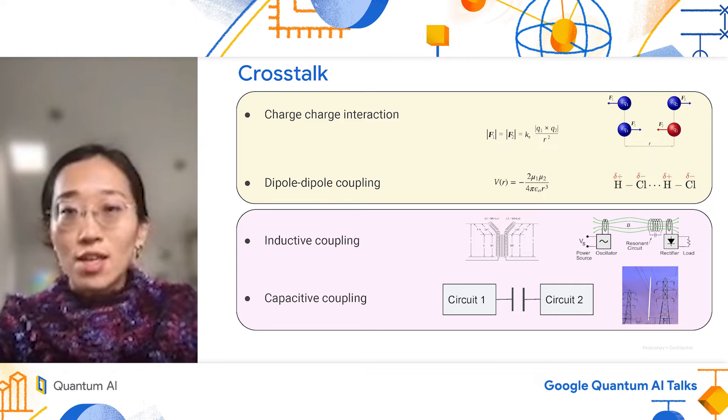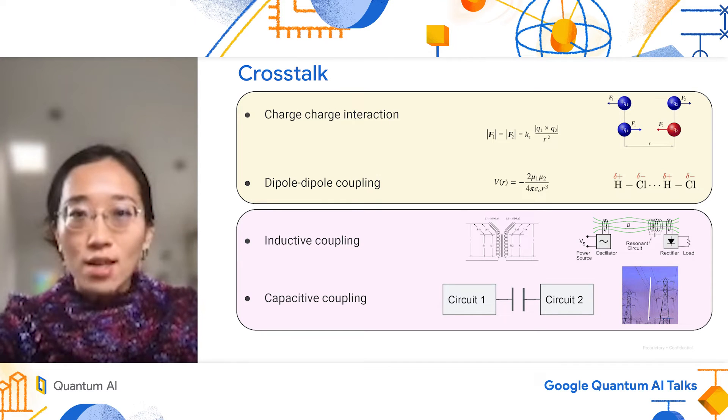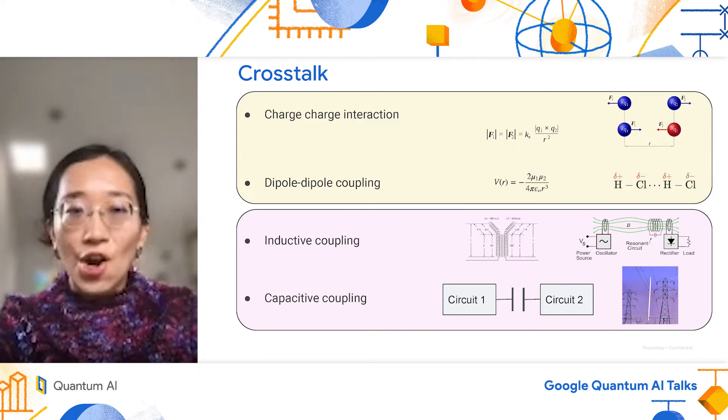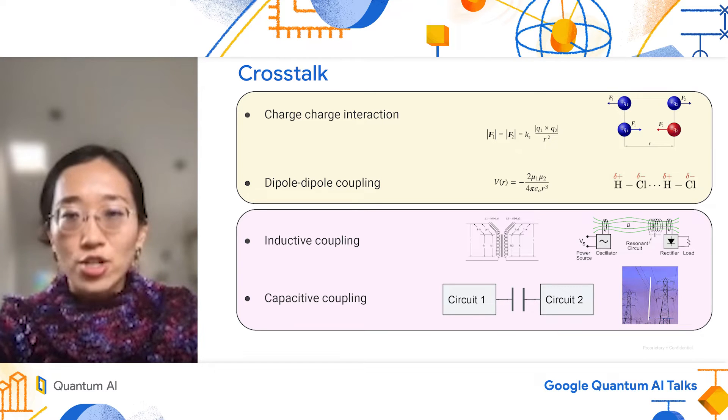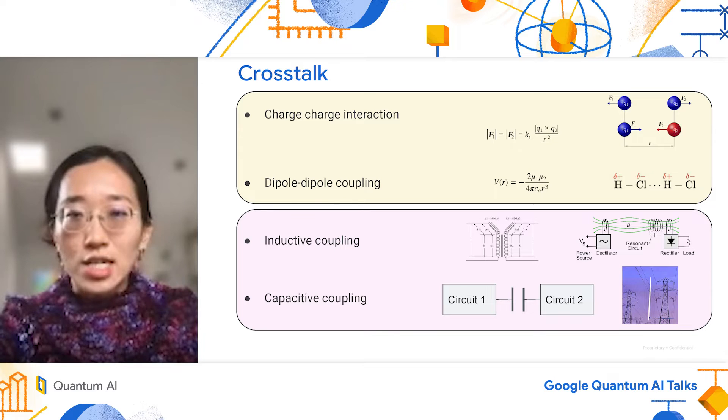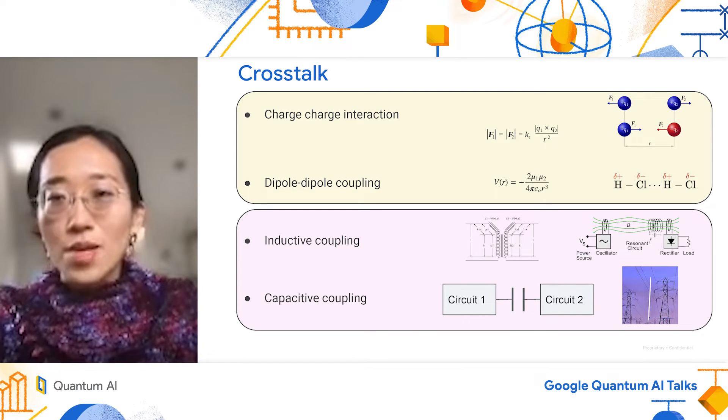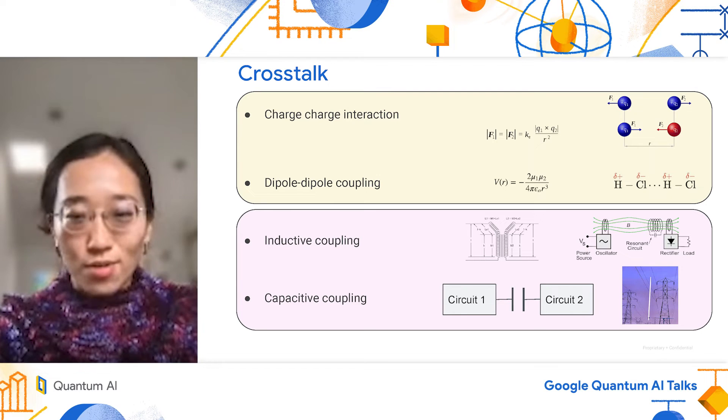For superconducting qubits which live in circuits, we also have lump element counterparts of these electromagnetic interactions. One important kind is inductive coupling, where a change of electric current in one inductor will cause a change of current in a neighboring inductor that shares the same electromagnetic field. Secondly, we have capacitive coupling, similar to charge-charge interaction. In the context of circuits, where there's a change of electric field in circuit one, if they're connected through a capacitor, there will be non-zero current flowing between the two circuits. This is shown in a simple experiment where if you put a light bulb between two power lines, the light bulb will light up, although I don't recommend doing this experiment in person.